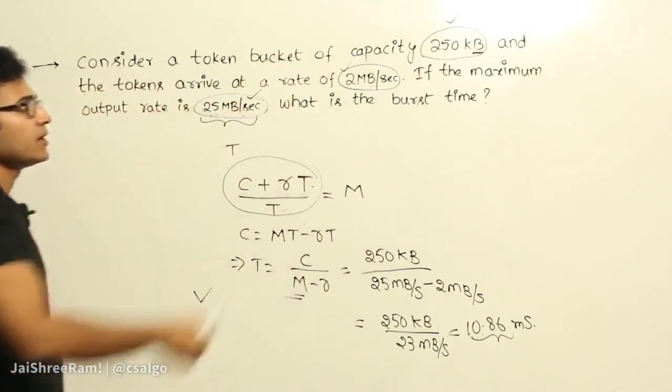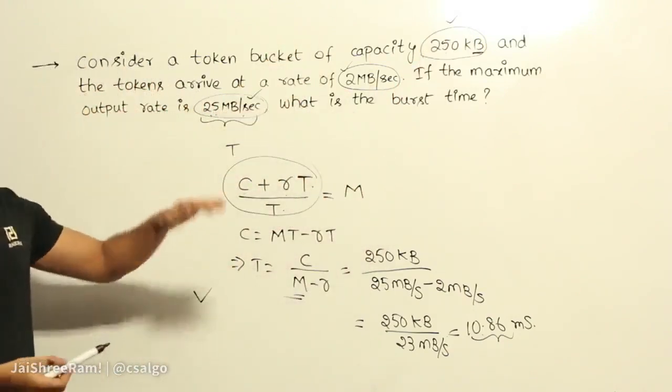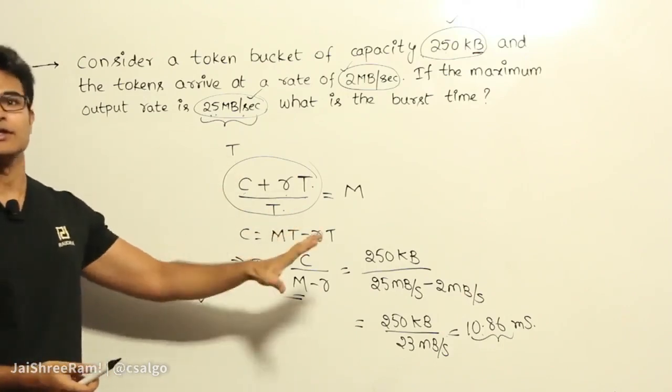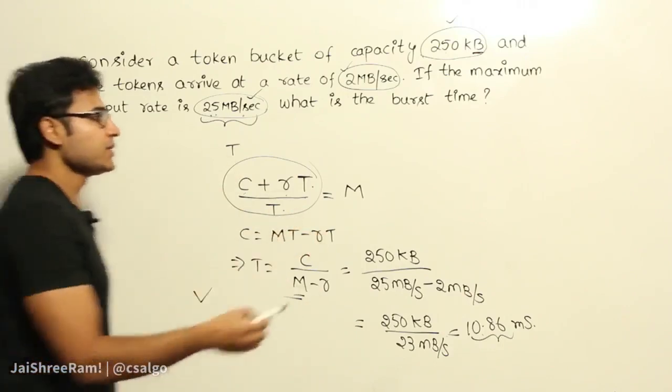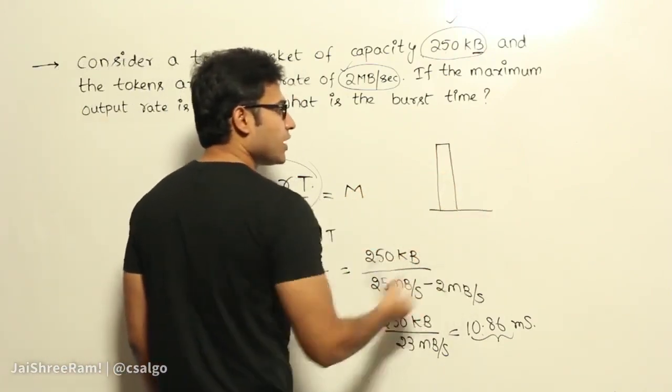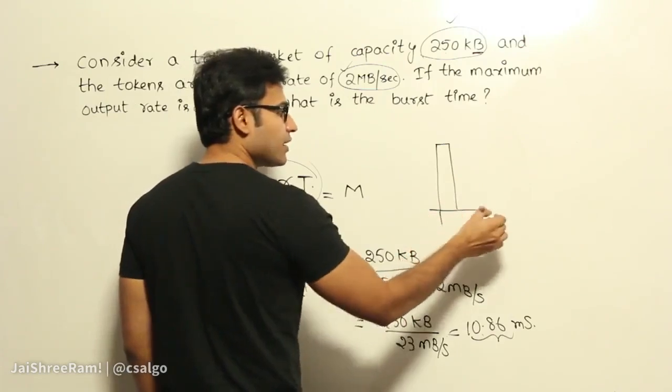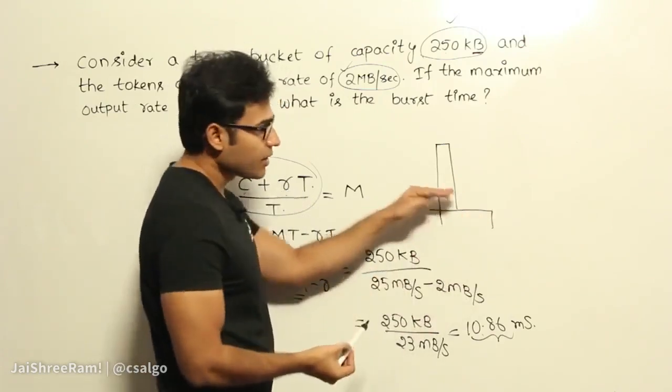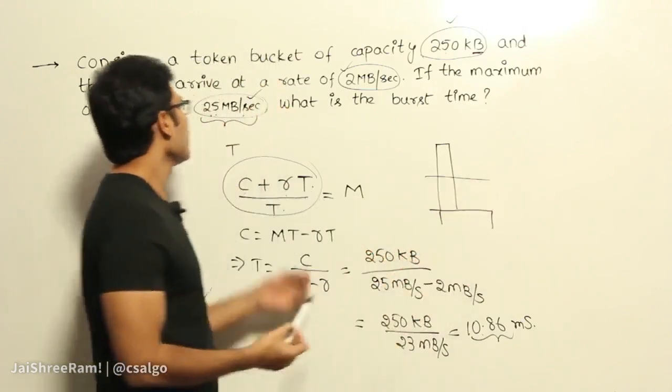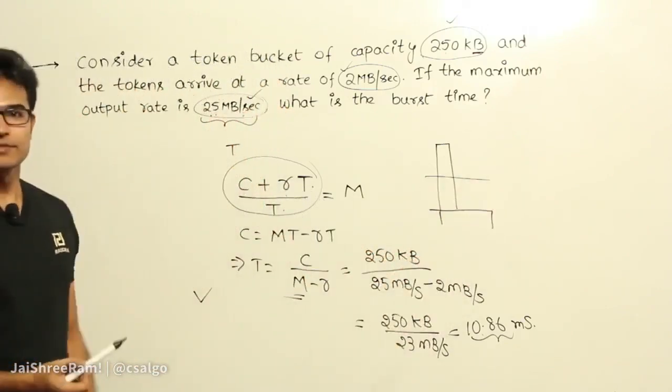So if the bucket is already having 250 KB initially and if you push it right away instantaneously, now what happened is instantaneously you are able to push out 250 KB, right? And now you are trying to divide it across this entire time. Then if you try to spread it across this entire time, then you are going to get an average of 25 Mbps.